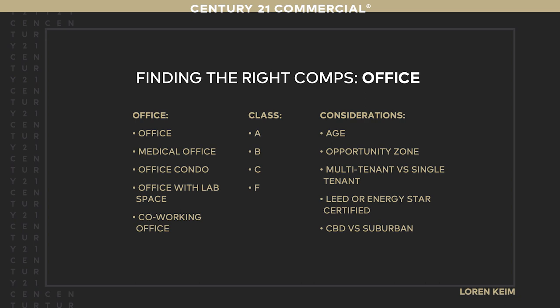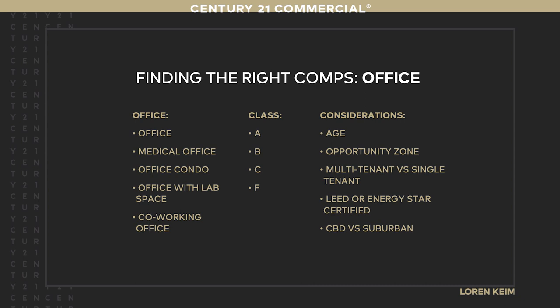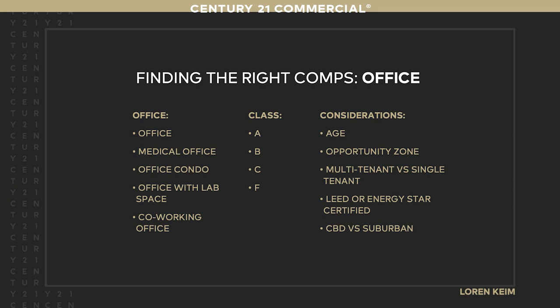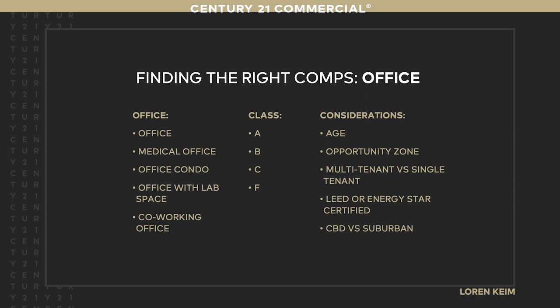When looking at buildings, we need to find something similar — medical office is very different from general office. You've got to have water almost everywhere in medical: in labs, hallways, and each exam room. Medical also requires clean rooms and certain HVAC systems; you can't convert a general office building without completely converting it. We also look at class A, B, C, and sometimes we don't have enough comps and need to adjust. Consider how old the building is — multifamily built in the 80s has lower ceiling heights than buildings from 10 years ago, and younger people pay more for the taller spaces.